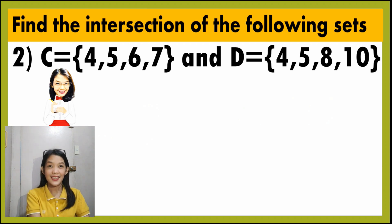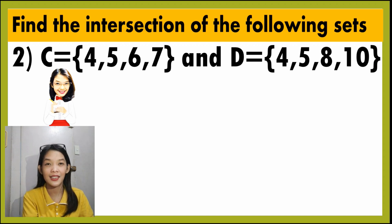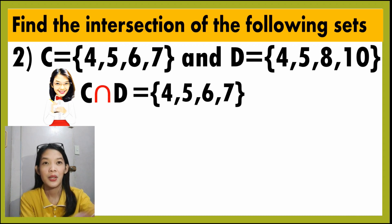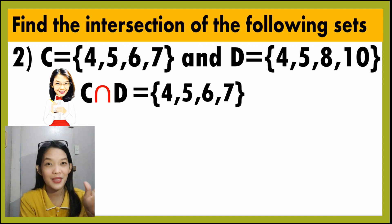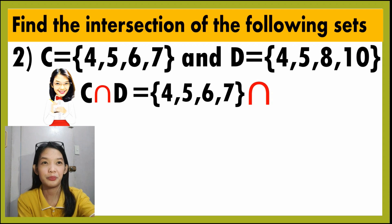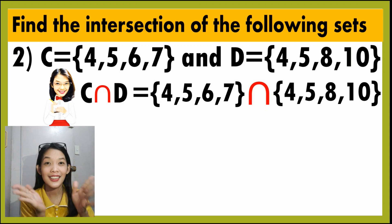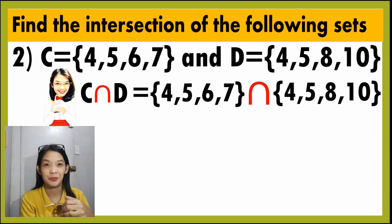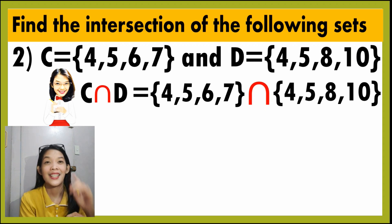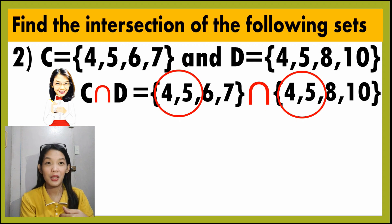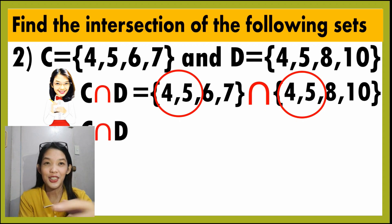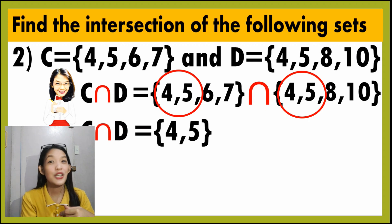For number 2, set C has the elements 4, 5, 6, and 7. And set D has the elements 4, 5, 8, and 10. To get the intersection of C and D, we must list the elements of C, which are 4, 5, 6, and 7, then the symbol for the intersection, then the elements of D, which are 4, 5, 8, and 10. To get the intersection, what are the common elements? The similar elements are 4 and 5. So the intersection of C and D is 4 and 5. It's easy, right?